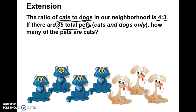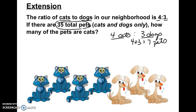How many of the pets are cats? If you're given a problem like this, you want to take your part-to-part and start thinking about a part-to-whole. There are 4 cats for every 3 dogs, meaning 4 plus 3 equals 7 total pets. So the ratio of cats to pets is 4 to 7, and that's going to be really important because I know there are 35 total pets.